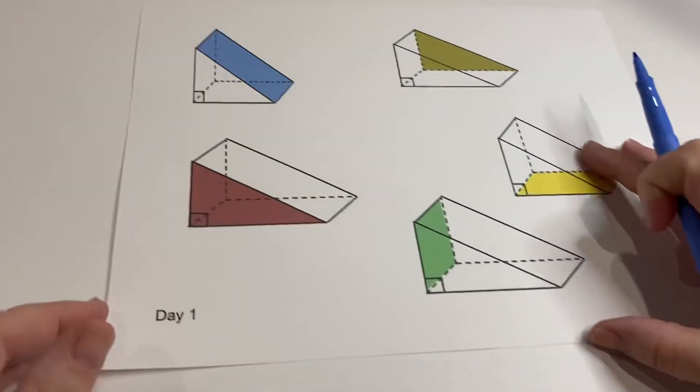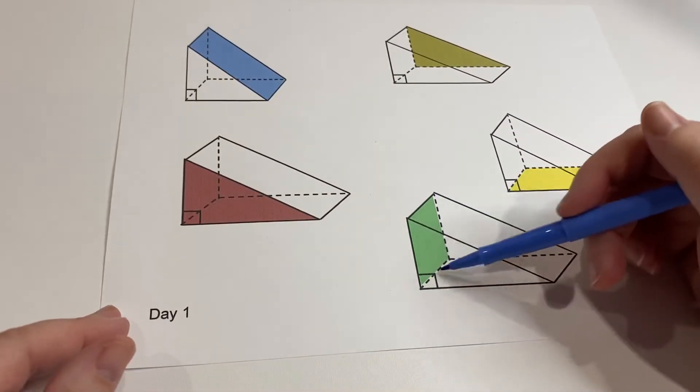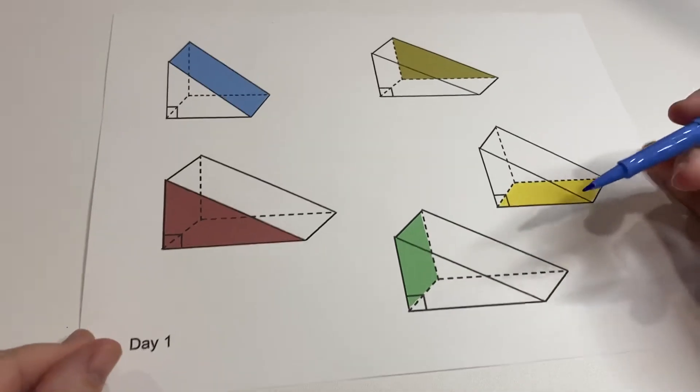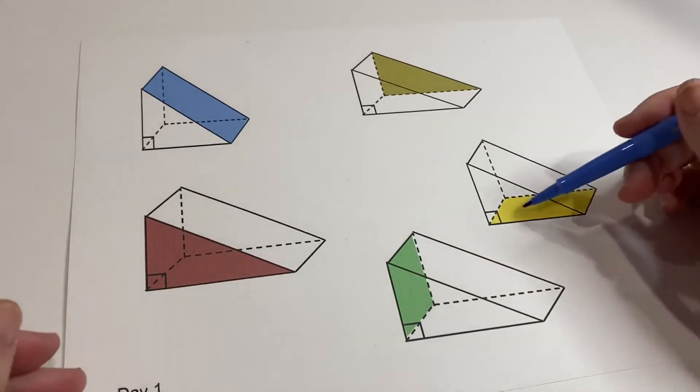Okay, and this one, we would call the rear, or the back rectangle. And then this yellow one, that would be the bottom rectangle.